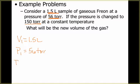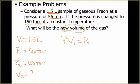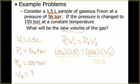Then it says the pressure has changed, so now I have a new pressure, P2. The temperature is constant, so I don't need to worry about it in my equation. The question asks what is my new volume, so V2 is what I'm trying to solve for. I know I'm going to need P1V1 equals P2V2. Substituting in: 56 times 1.5 equals 150 times V2. Dividing both sides by 150, V2 equals 0.56 liters.